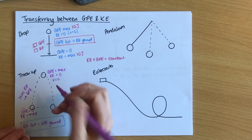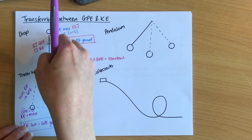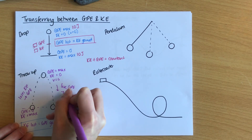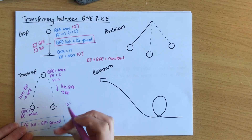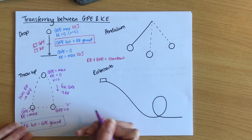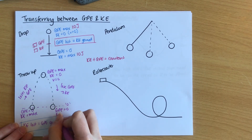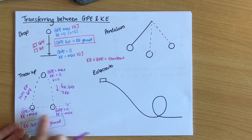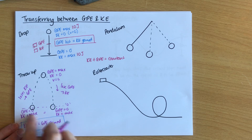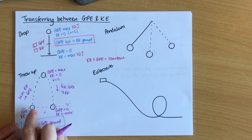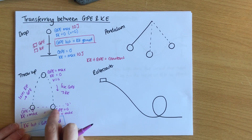As the ball falls back down, the reverse happens — the same thing as before. It loses GPE and that turns into KE, so it speeds up. At the bottom, GPE is zero or the minimum and KE is back to the maximum. These values would equal each other, which means whatever speed you threw the ball up at is the speed it will have when it gets back to that point on its way down again.